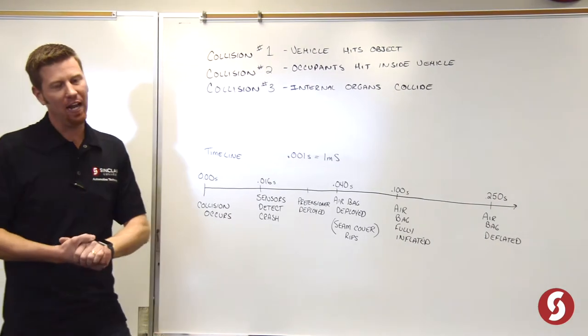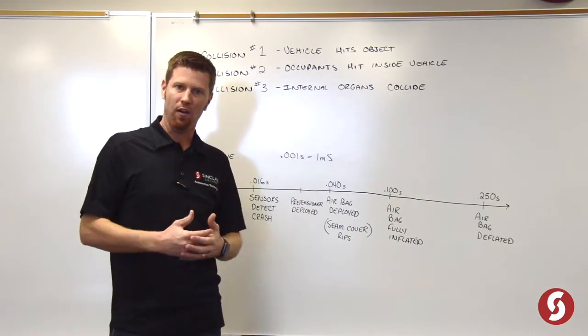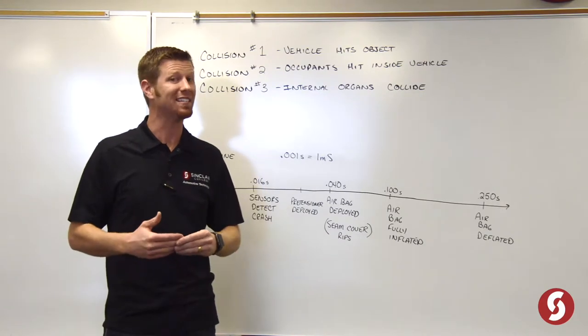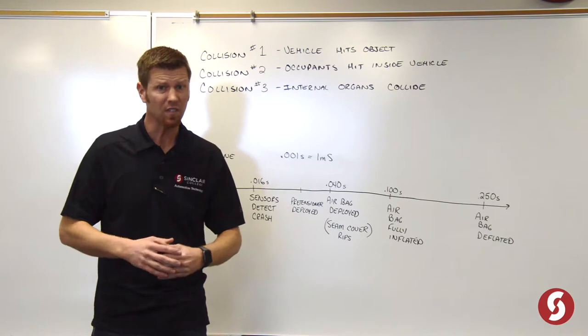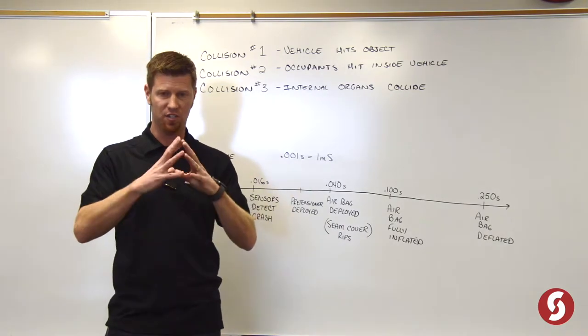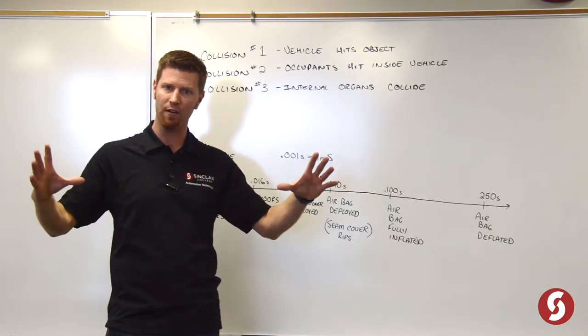One of the things we talk about with airbags is the safety. Now an airbag should be used in conjunction with the seatbelt. That's why it's the supplemental inflatable restraint system. Because the purpose of an airbag is to spread the force of the crash over a larger area.